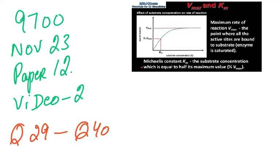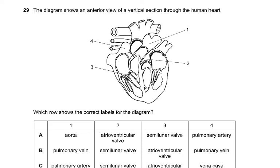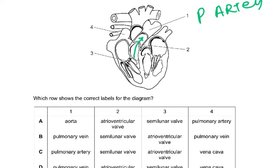Question number 29. The diagram shows an anterior view of the vertical sections of the human heart. Structure 1 is the pulmonary artery, because it's arising from the right ventricle — arising from here — so this has to be the pulmonary artery, which is going to the lungs. The only correct answer for 1 is this one.